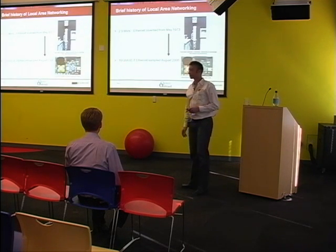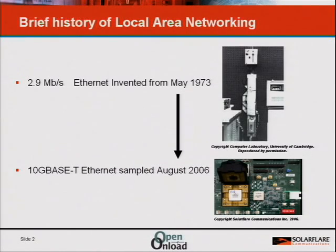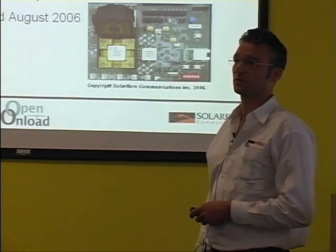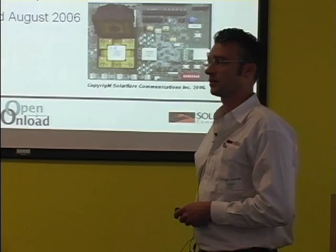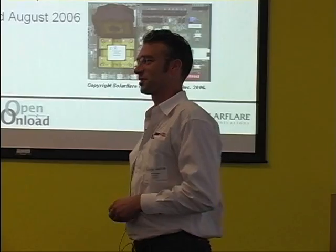I thought I'd start with a couple of interesting dates from the history of local area networking and a bit of a history revisionism lesson. Ethernet this year is 35 years old. The memo in 1973 Bob Metcalf wrote started off the whole revolution. And then in 2006, Ethernet's now running four orders of magnitude faster at 10G base T. SolarFlare sampled its first 10G base T PHY in August 2006, just a couple of months after the standard was ratified. So that allows me to get my one and only product placement out of the way.